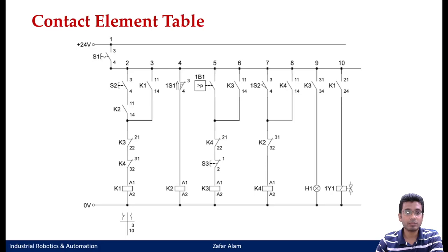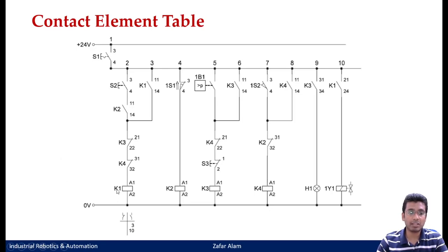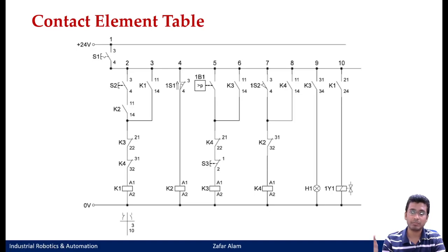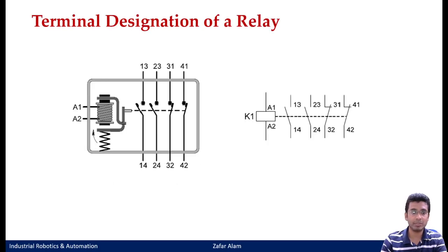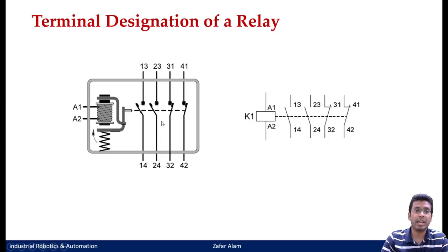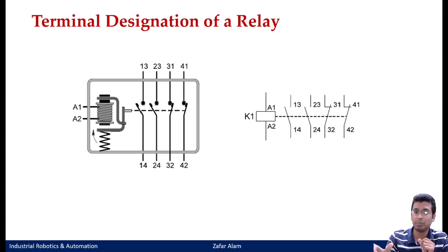When K1 is energized — the student asks whether there are two K1s and which one comes. The contactor K1 is only one, but there are two contacts. When the relay is energized, if suppose K1 has 10 make switches associated with it, the moment this relay is energized, all 10 will get energized at the same time. Once this element is pulled, all your normally open contacts will close and all the normally closed contacts will open simultaneously. Irrespective of how many contacts — if there are 30 contacts of a single relay K1, all 30 will get actuated at the same time.